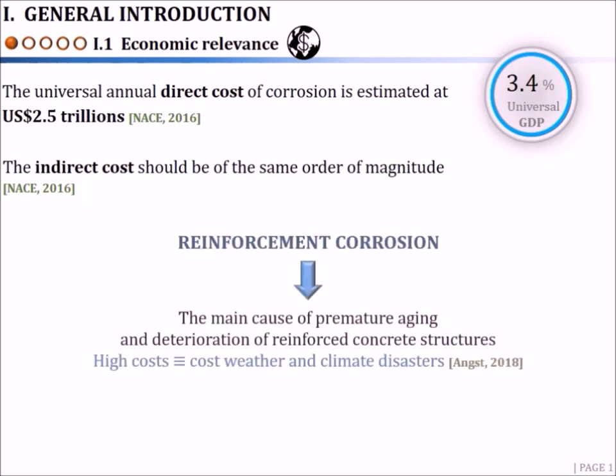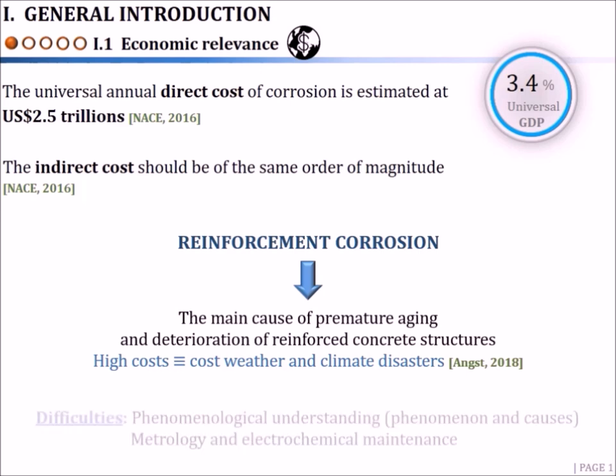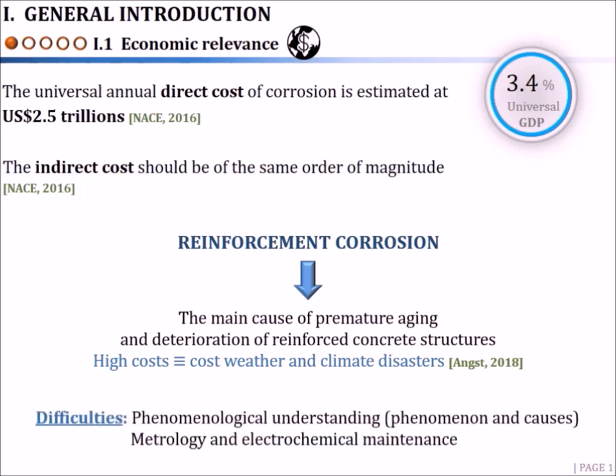In reinforced concrete, corrosion is the main cause of the premature degradation of structures and it causes very high costs, comparable to those related to weather and climate disasters. However, the difficulties found in this domain are mostly related to phenomenological understanding and problems related to metrology and electrochemical maintenance.